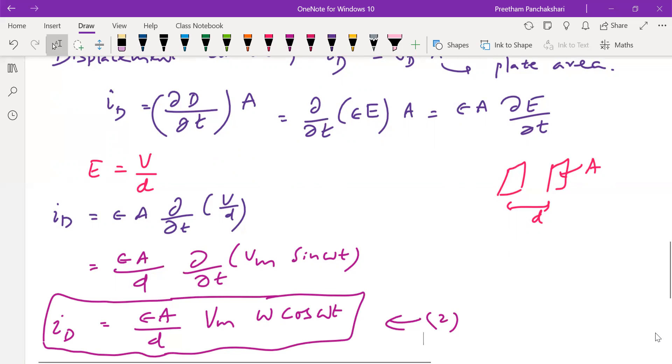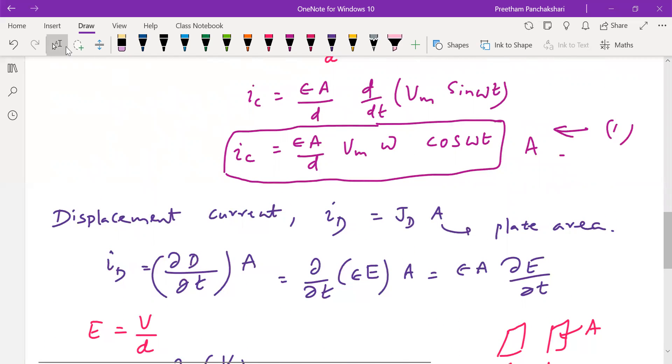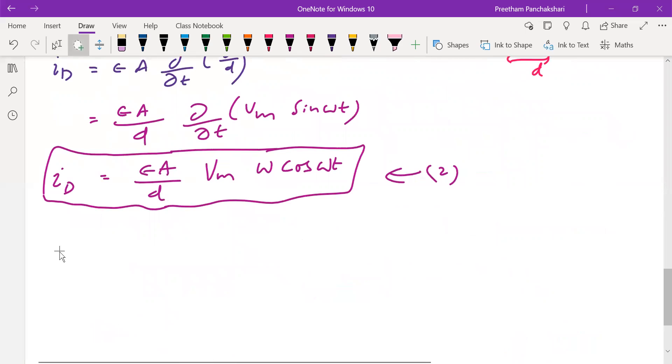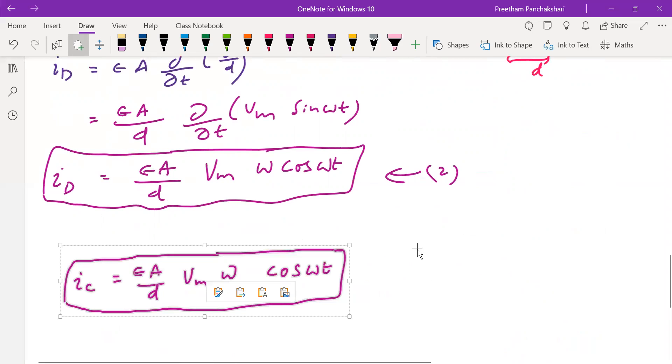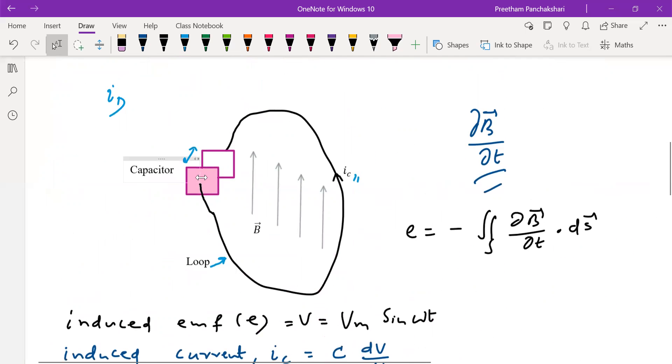So now let us compare this id displacement current with that of conduction current. If you observe both of them we can say that both are absolutely equal. So same terms you can see. So therefore we can conclude that the displacement current flowing between the two plates of the capacitor is exactly equal to the conduction current flowing outside the capacitor in the closed circuit. So that's how the current flow is continuous in a current loop containing the capacitor.